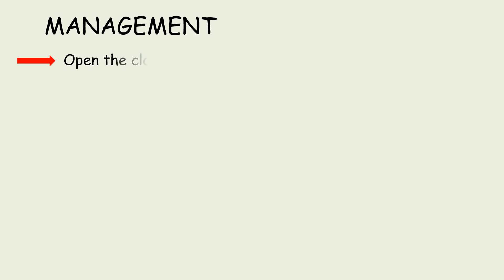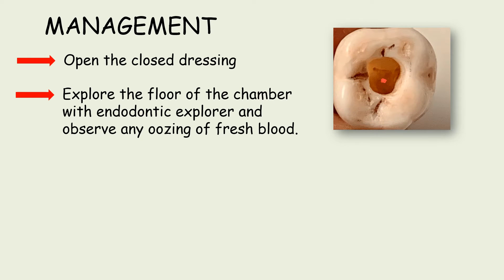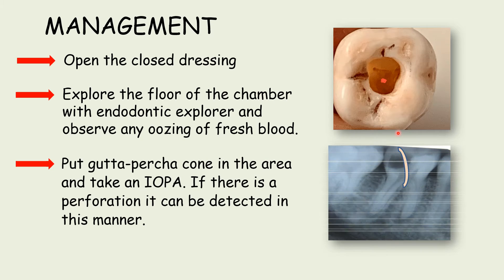The first step in management is to open the closed dressing and then, taking an endodontic explorer, we explore the floor of the pulp chamber to observe any oozing of fresh blood. Now we can see there is fresh blood oozing here, so this could be a possible perforation. We take a gutta percha cone and insert it in that opening like this and then take an X-ray. If there is a perforation, it can be detected in this manner.